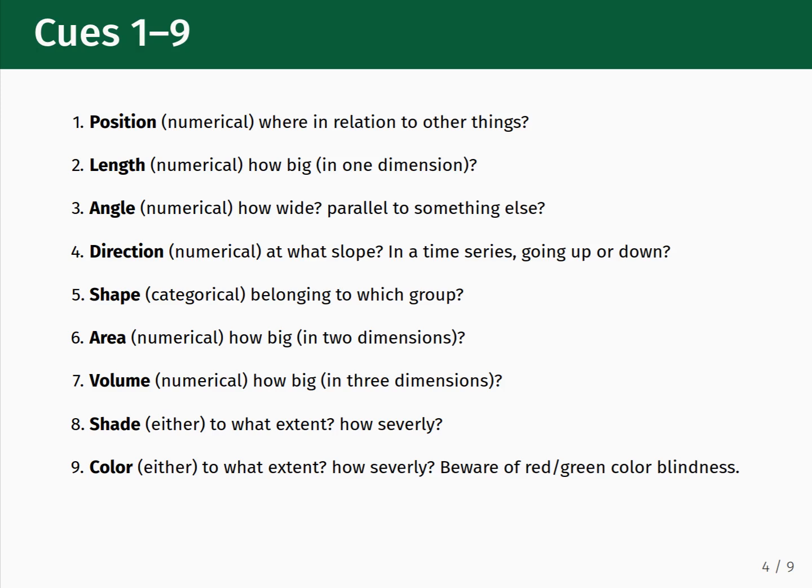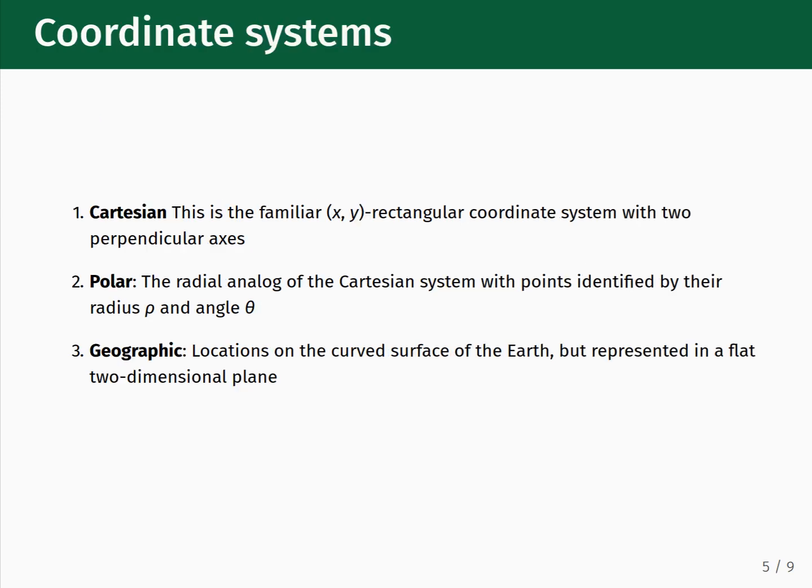The shade visual cue can represent either numerical or categorical data and can show the extent to which a certain feature is present or how severe it is. Last is the color visual cue, which can also represent either numerical or categorical data and can show to what extent or how severely a certain feature is present. Keep in mind that when you are using color, you should be mindful of red-green color-blindness.